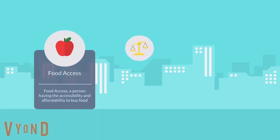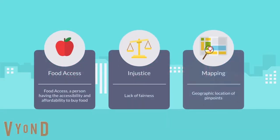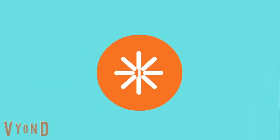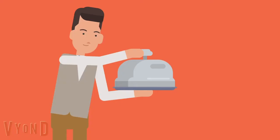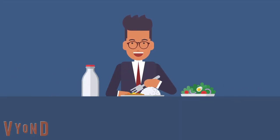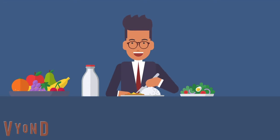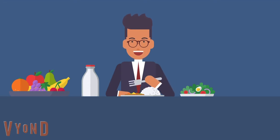In today's lesson, you will learn about food access, injustice, and a fun activity called mapping. But first, what is food access? Food access is when a person has the availability to buy affordable and healthy foods.